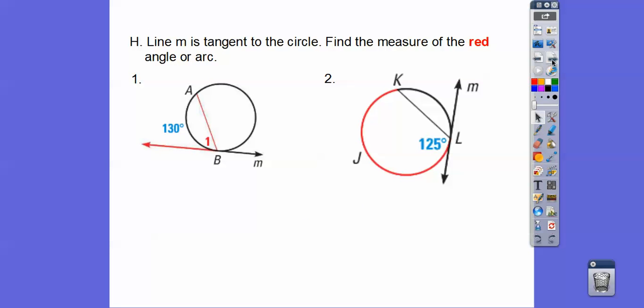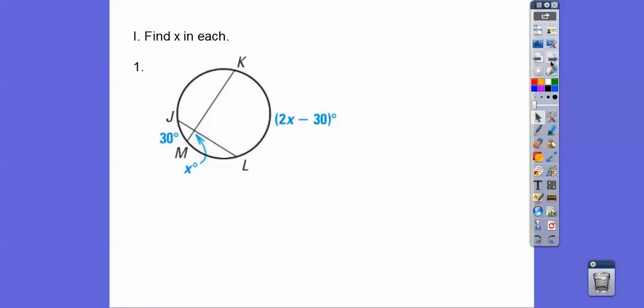Here we have line M. Line M is tangent to the circle. Find the measure of the red arc or angle. So, we're going to find this angle right here. It is half of this arc right here because it's an inscribed angle. So, we divide and we get 65. And this angle is also half of this arc. So, if we multiply it by 2, we can find out that that arc is 250 degrees.